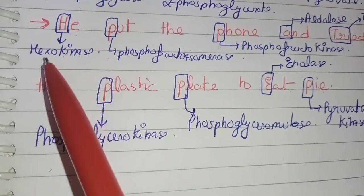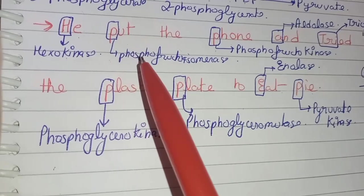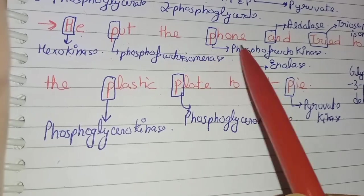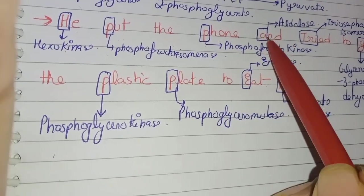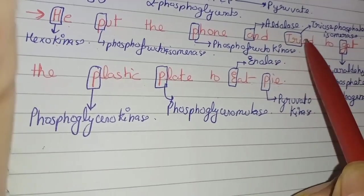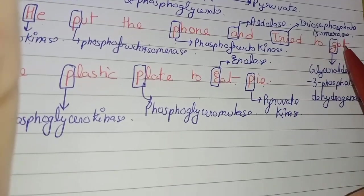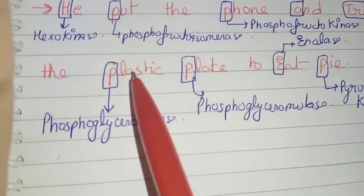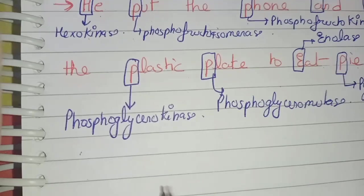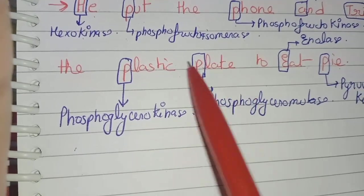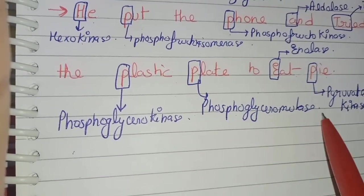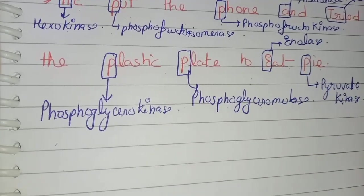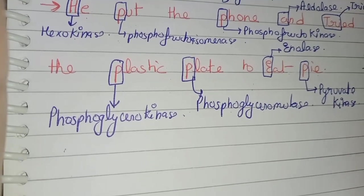He — H represents hexokinase (step 1). Put — P represents phosphoglucose isomerase. Phone — P represents phosphofructokinase. And — A represents aldolase. Try — T represents triose phosphate isomerase. To Get — G represents glyceraldehyde-3-phosphate dehydrogenase. Plastic — P represents phosphoglycerokinase. Plate — P represents phosphoglyceromutase. Eat — E represents enolase. Pie — P represents pyruvate kinase.